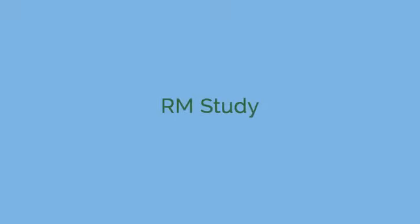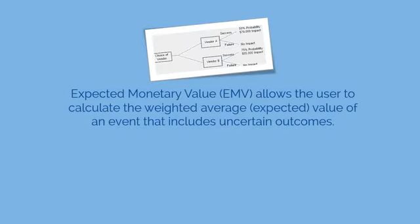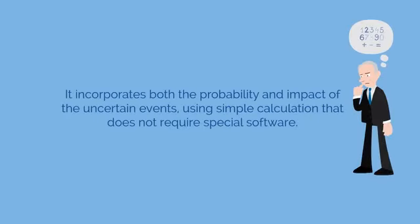Hello and welcome back to Chapter 7 of RM Study. In this module, we'll discuss one of the techniques for performing the quantitative analysis process: Expected Monetary Value. Expected Monetary Value, or EMV, allows the user to calculate the weighted average value of an event that includes uncertain outcomes. It's well-suited to decision tree analysis. This technique incorporates both the probability and impact of uncertain events using a simple calculation that doesn't require special software.